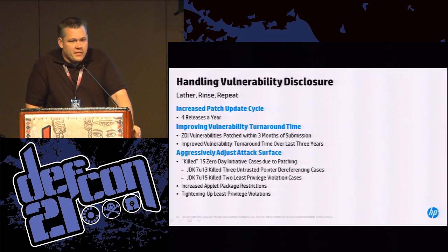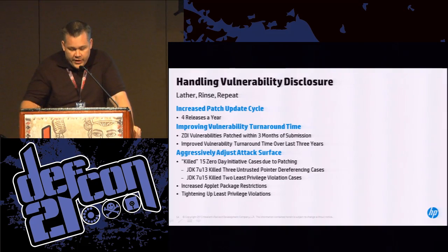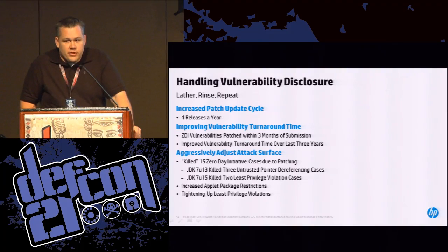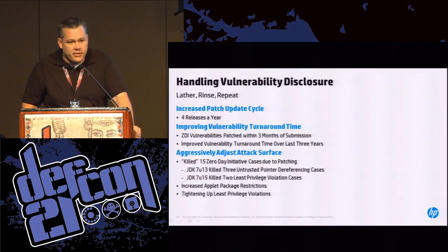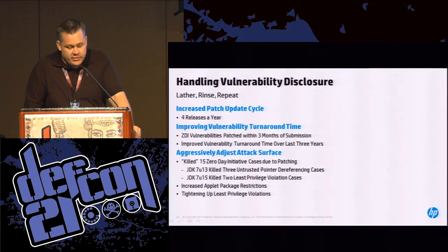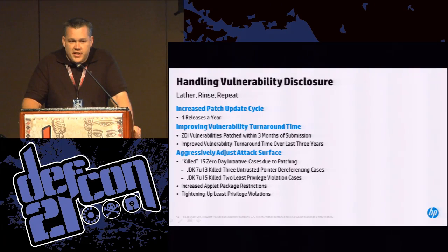We have a unique perspective on how vendors handle vulnerability disclosures because we handle so many of them — over 200 just this year. In the case of Oracle, on average they're taking about three months to turn around a zero-day submission, putting them right in the middle of the pack for vendors. But they've actually decreased their turnaround time year-over-year while vulnerability submissions have gone up — patching 50 bugs in 2011 and over 130 in 2013 while decreasing turnaround time. It looks like they're staffing up their response organization. They've increased their patch cycle — releasing about four times a year, sometimes more when zero days are discovered — and they've made public commitments to decrease response time when a zero day is discovered.